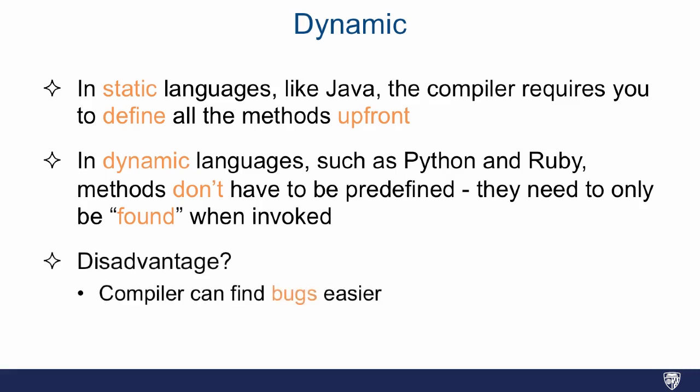Now the disadvantage to this is that in a static language, if you make a typo, the compiler could help you out because it knows that the methods really exist. In a dynamic language, the method doesn't have to exist, so it's much harder for a compiler or the IDE to help you out. So why would you ever want to have a language that's that dynamic?